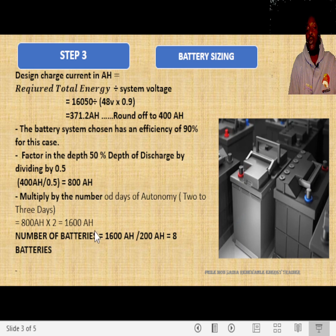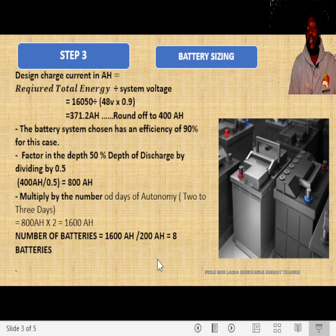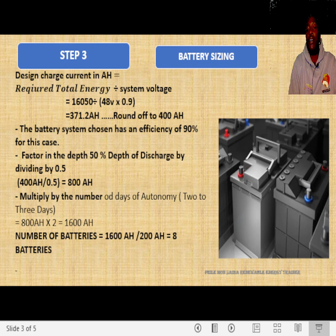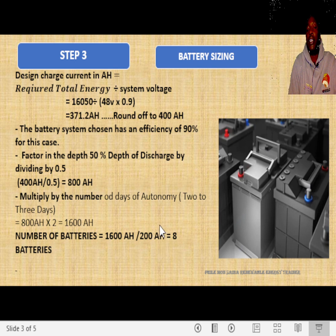Finally, the number of batteries we will need will be 1,600 AH divided by 200 AH. 200 AH is the size of battery we are going to use for our case, so we are going to have eight batteries of 200 AH each. Lead acid batteries come in sizes of 50 AH, 70 AH, 100 AH, 150 AH, 200 AH, and many others. For this case, we choose 200 AH, which comes to eight batteries.